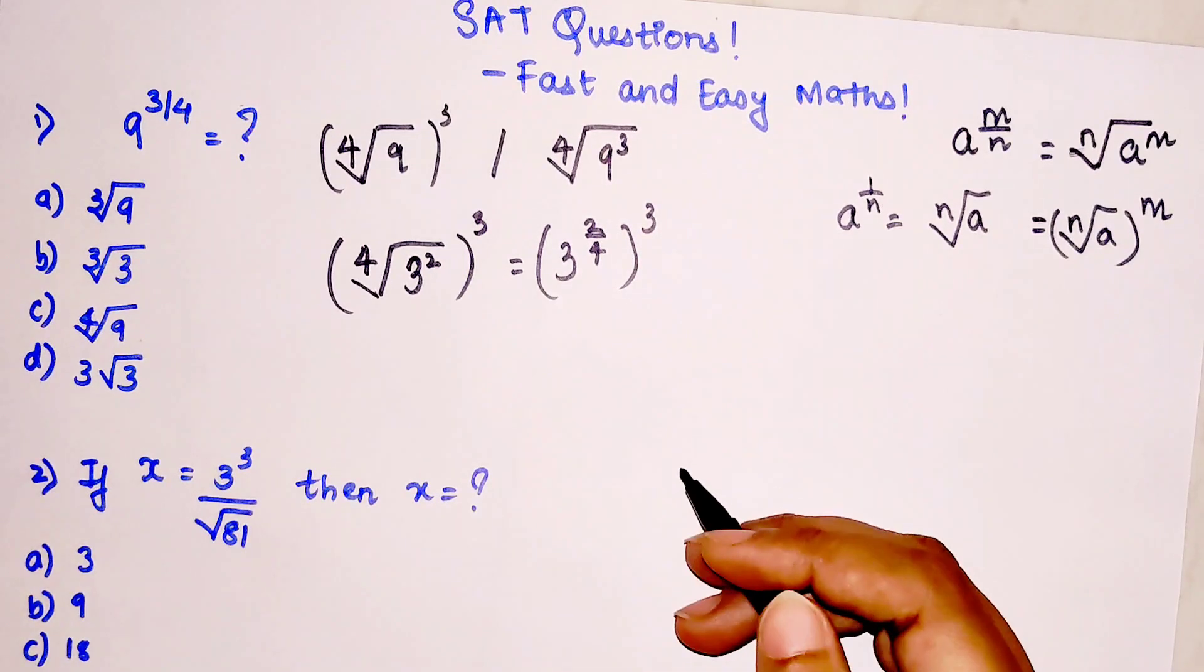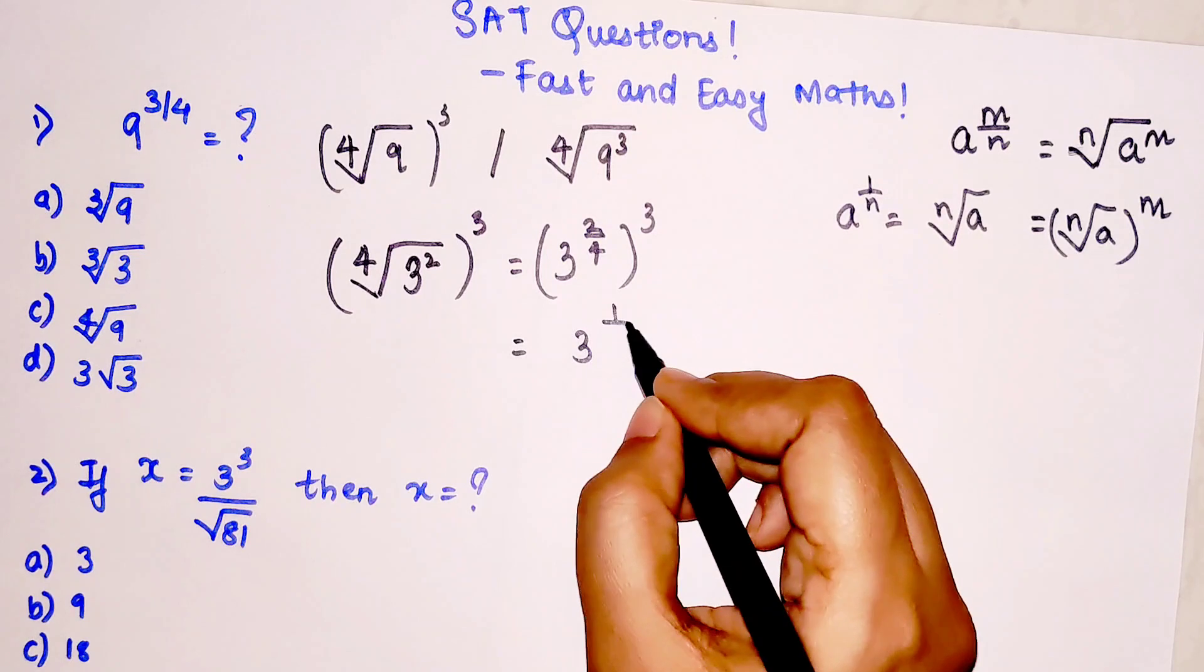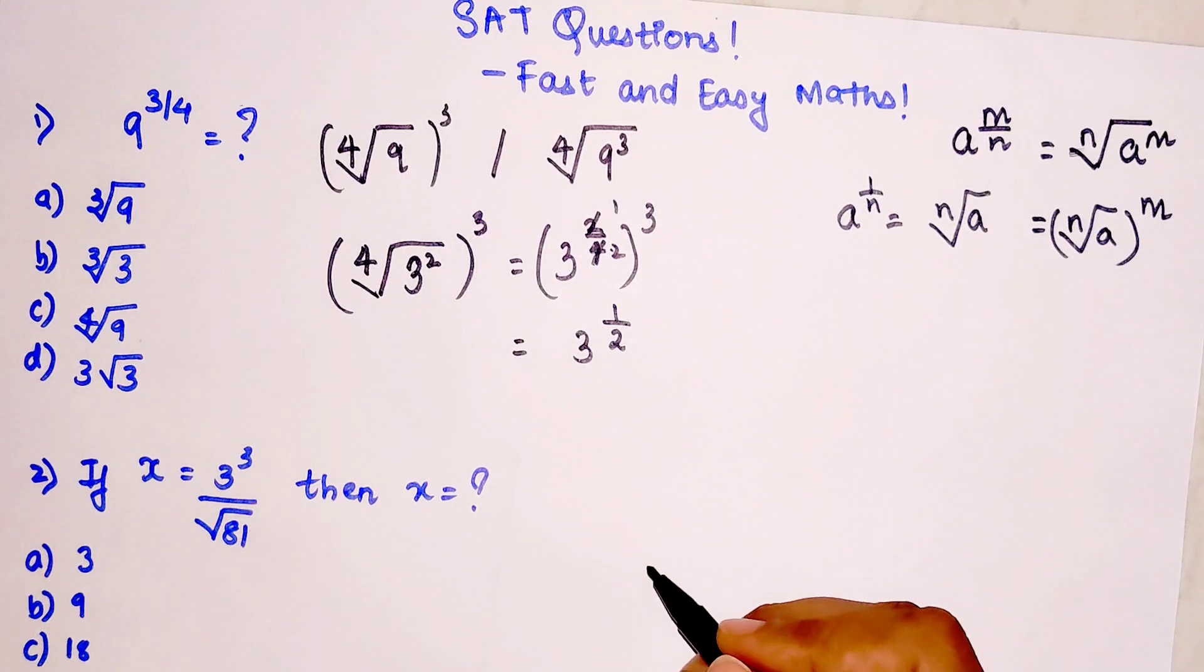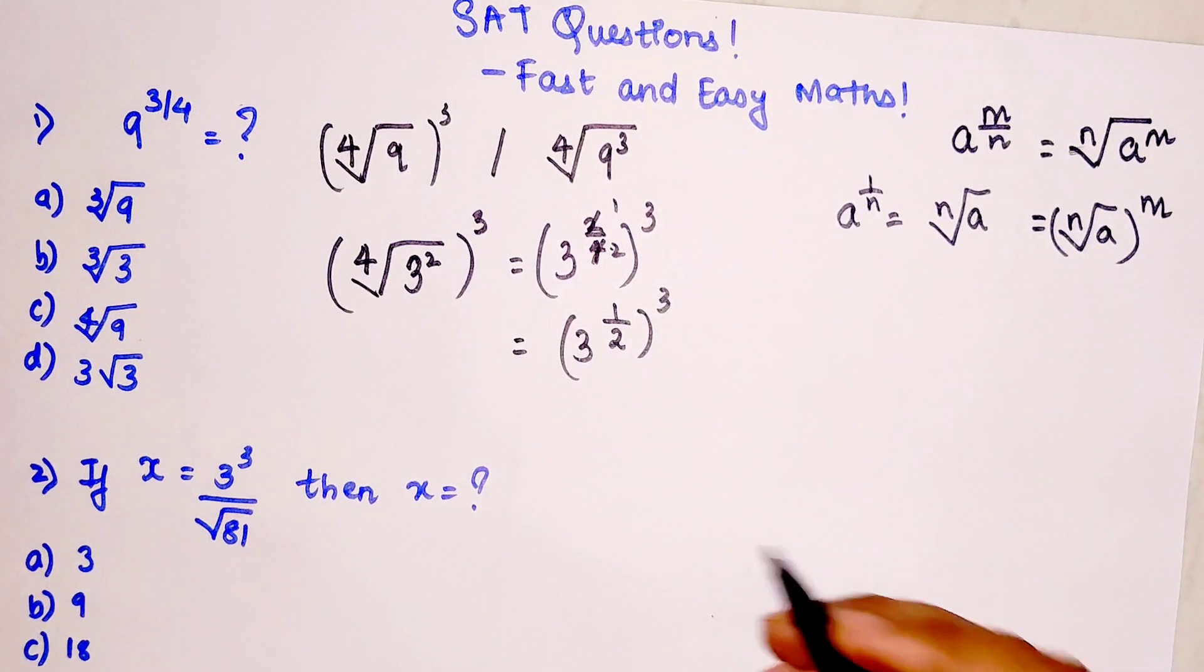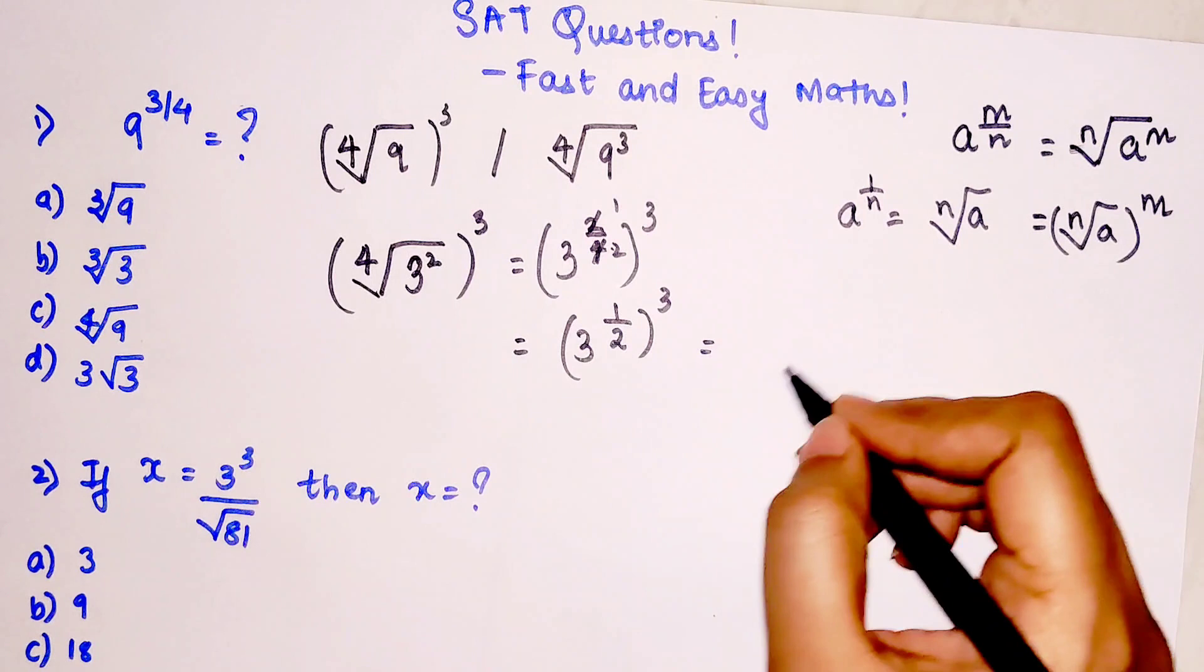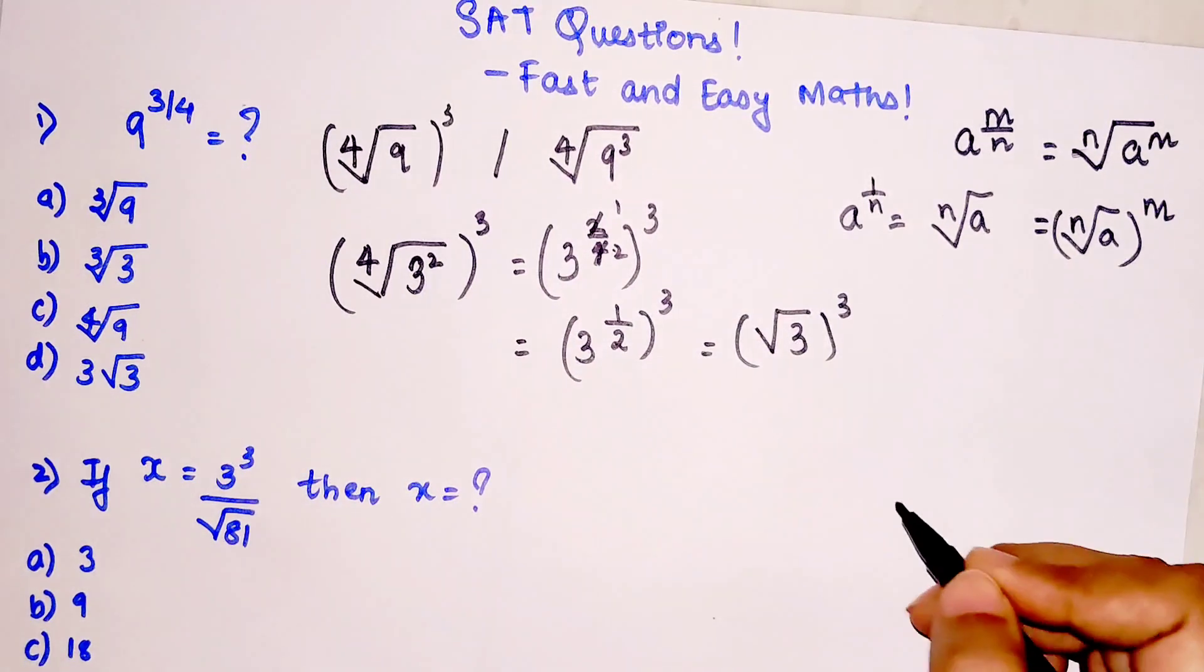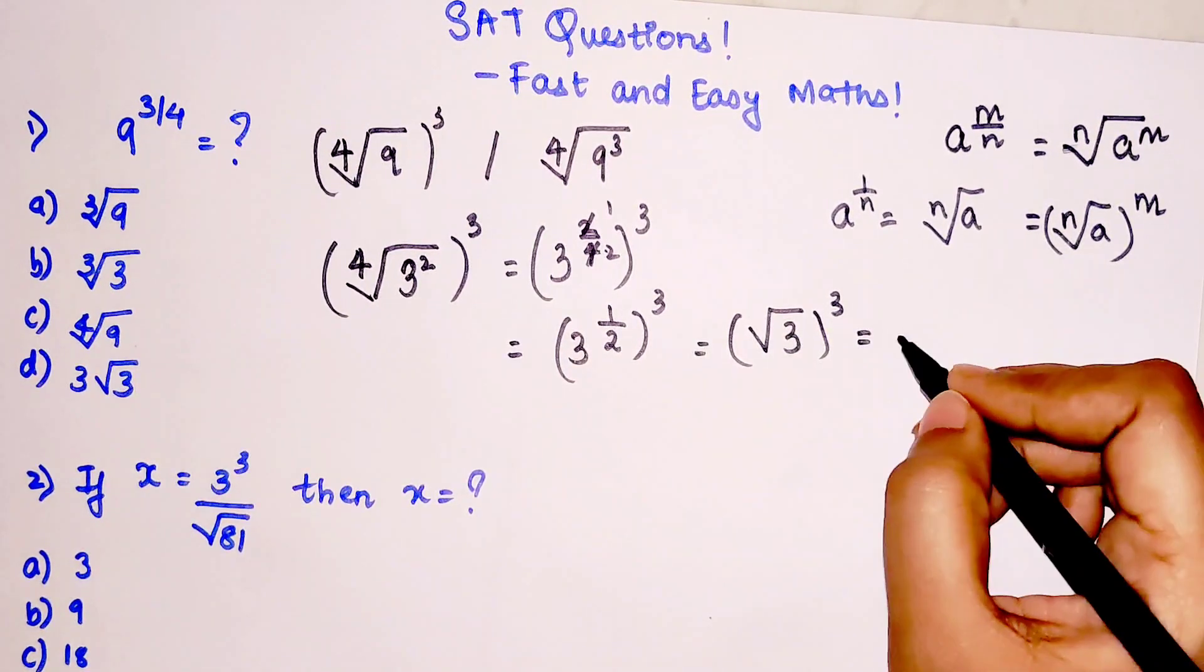So here this now becomes 3 raised to 1 by 2, as two and four cancel to give one-half. This is 3 raised to 1 by 2, the whole raised to 3. Now please understand, 1 by 2 is nothing but the root of 3, the whole raised to 3. Anything raised to 3 means that number or entity is getting multiplied three times.